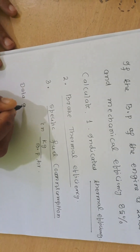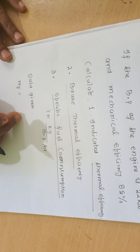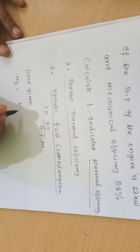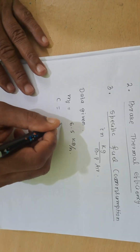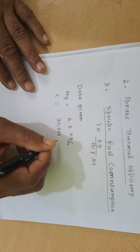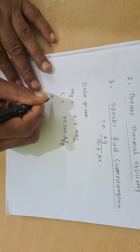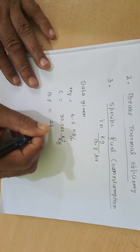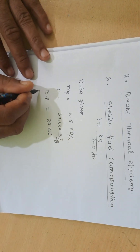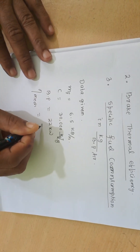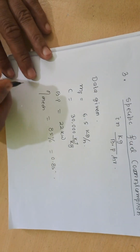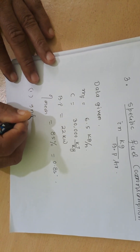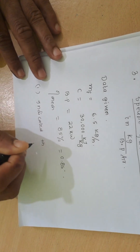Data given: MF — mass of fuel consumed — is equal to 6.5 kg per hour. C — calorific value of fuel — is equal to 30,000 kJ/kg. BP — brake power — is equal to 22 kilowatt. Mechanical efficiency is equal to 85%, that is 0.85.